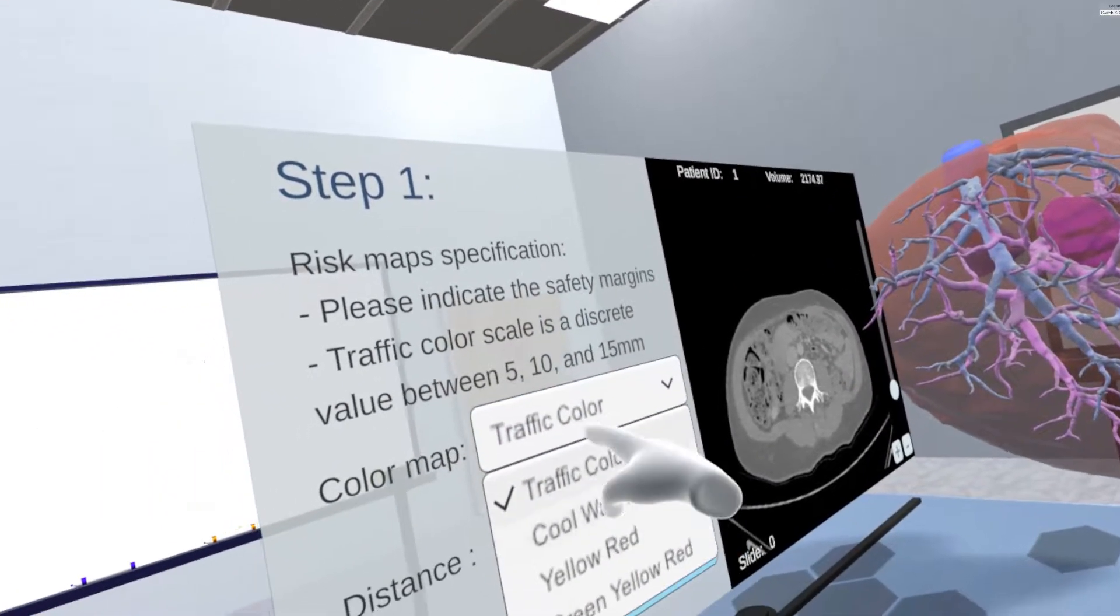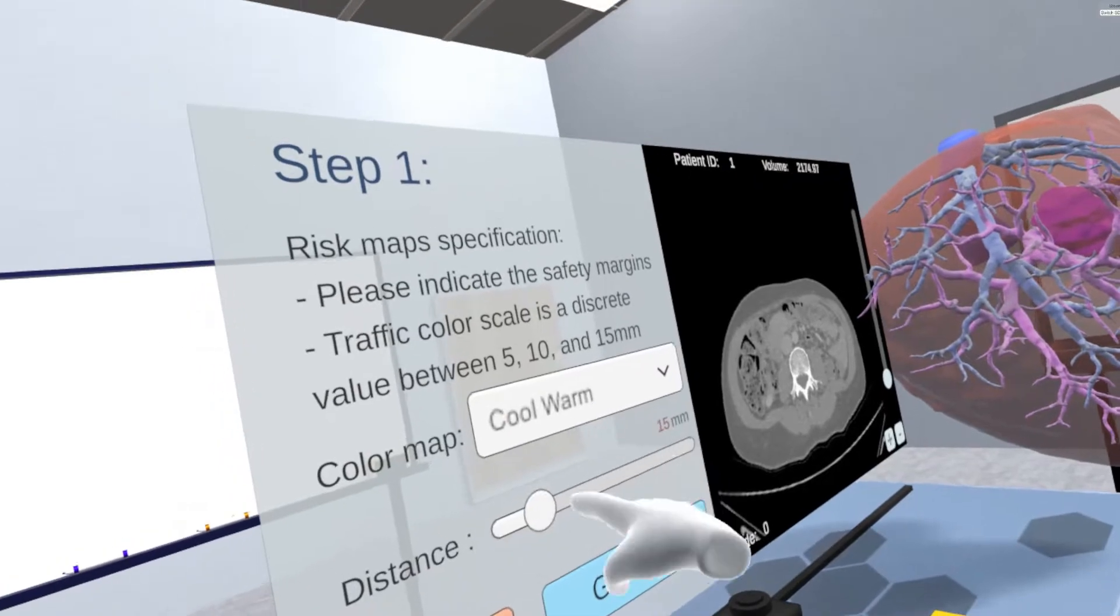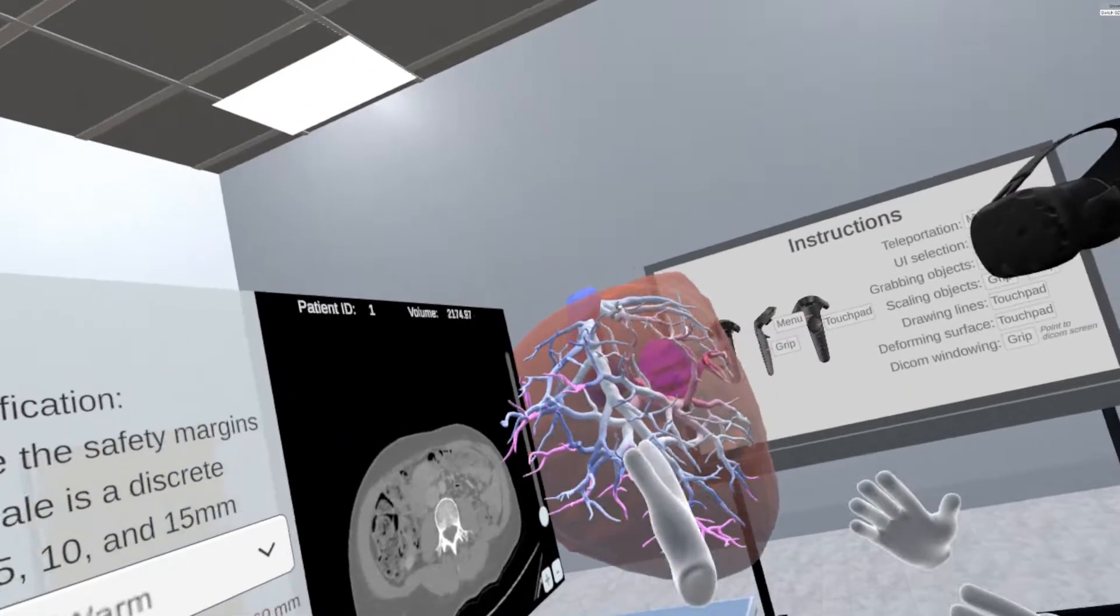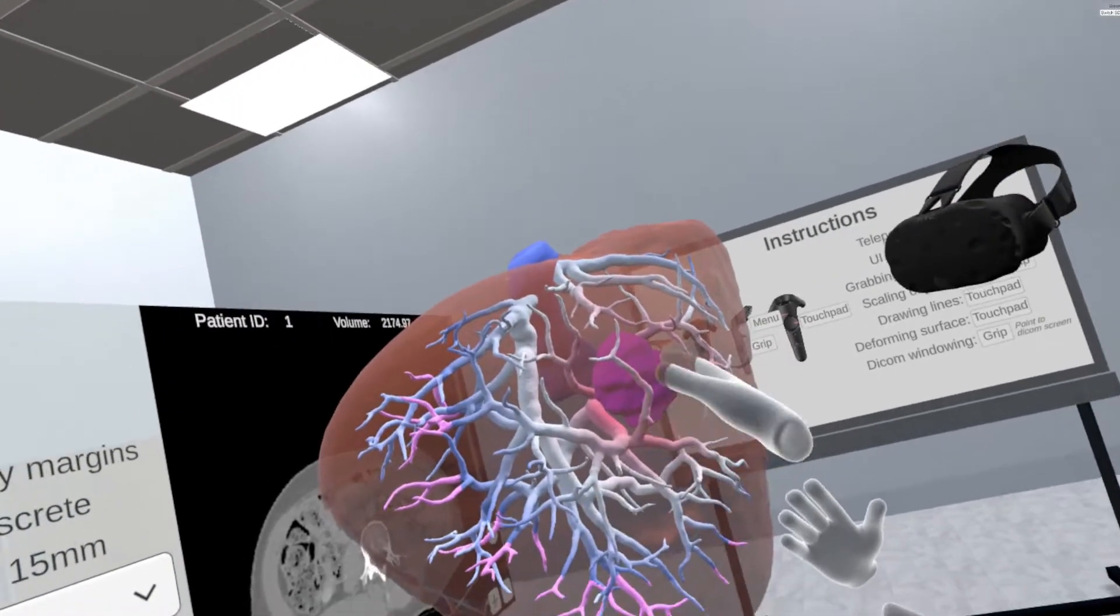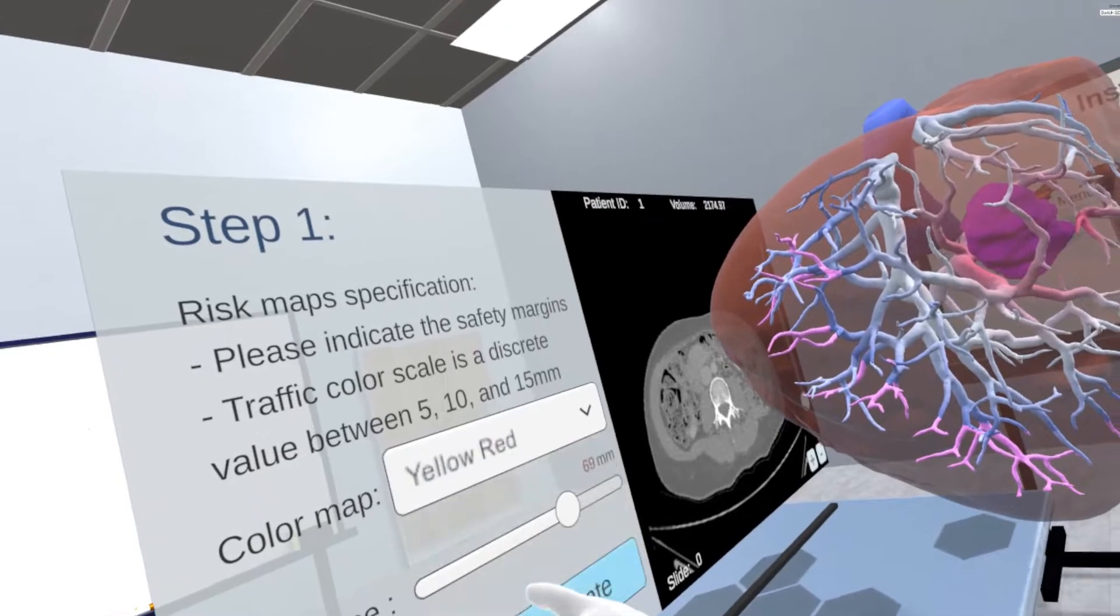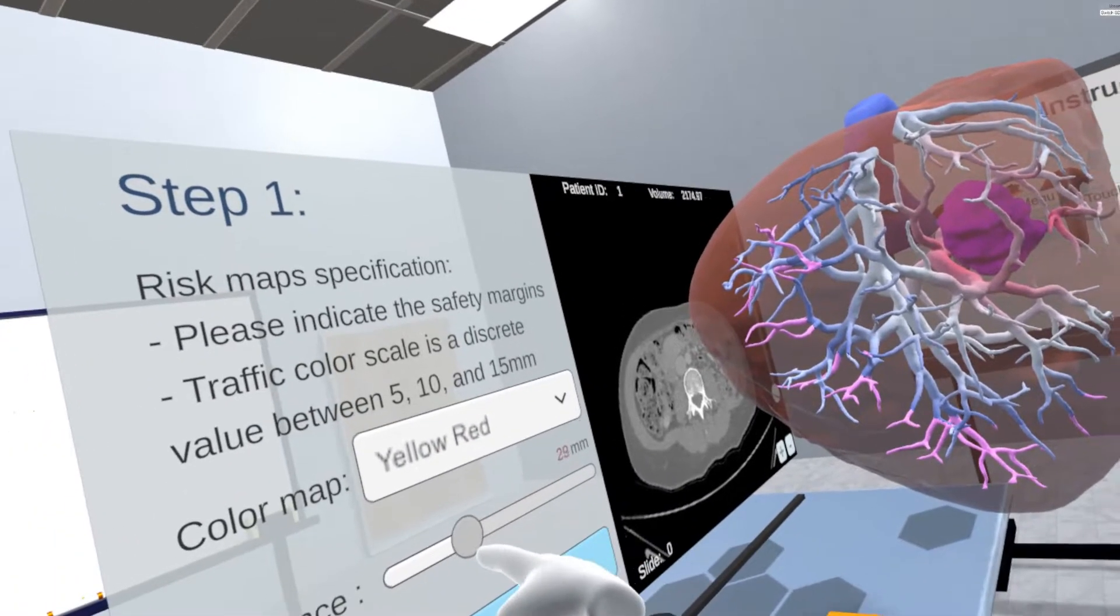We provide four color maps for risk maps visualization to support the users in assessing the distance from the tumor to surrounding vascular structures. They have options to preview and generate the visualization based on a given distance value to the tumor and a color map.